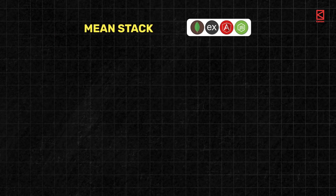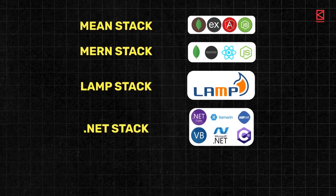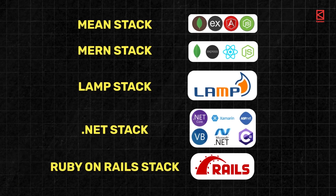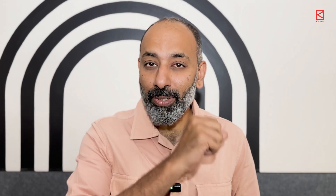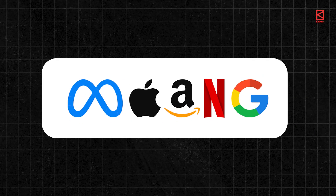There are different tech stacks used to build apps and websites. Some of the popular ones are MEAN stack, MERN stack, LAMP stack, .NET stack, Ruby on Rails stack, and more. Companies use these stacks to develop software that serves millions of users, and learning them is your key to your dream tech job.